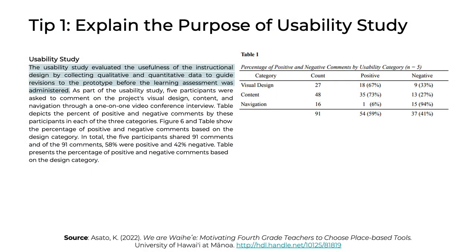Tip 1: Explain the purpose of your usability testing. It is important to remind your readers why you conducted usability testing. The purpose, of course, was to uncover possible usability problems. However, it's important for the flow of your paper to remind your reader of this fact. Here, the author wrote: 'The usability study evaluated the usefulness of the instructional design by collecting qualitative and quantitative data to guide revisions of the prototype before the learning assessment was administered.' This is an excellent example because it is stated right in the first sentence of the section and directly reminds the reader about the purpose of the usability testing.